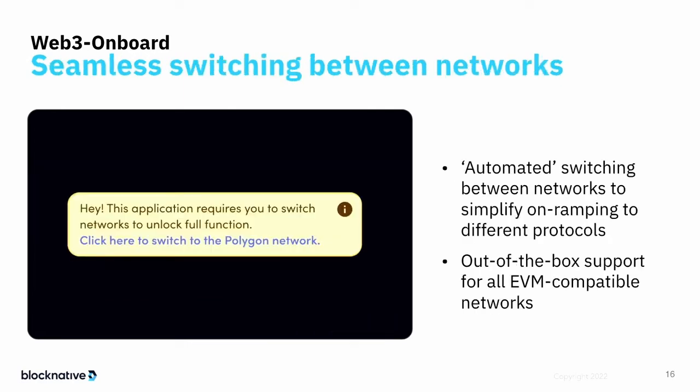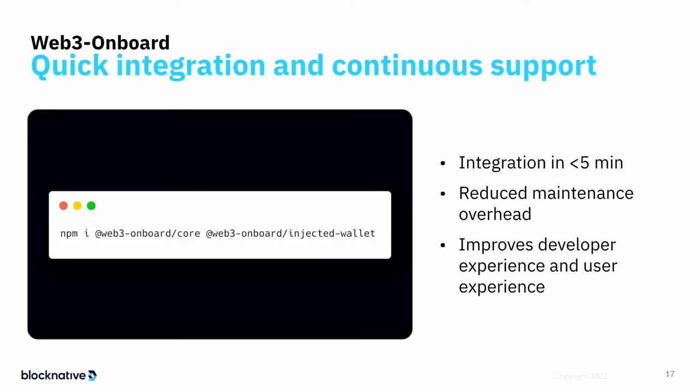Seamless switching between networks is also important — it can get confusing for your users. You don't want them sending to an address on the wrong network because they thought they were on a different one. That stuff happens, so this is really important. Here's a one-line NPM install — this is how you do it. Super simple. This is the Web3 Onboard core.